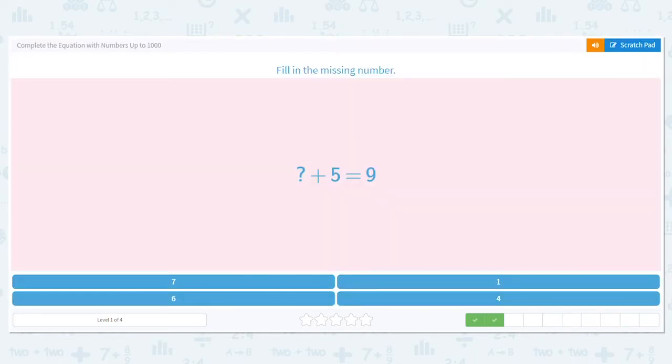Let's try another one. Blank plus 5 equals 9. Now this time there's answer choices. We have 7, 1, 6, and 4. Worst comes to worst, you can always guess and check. You can plug in the 7 and do 7 plus 5. You can try 6 plus 5 and see if that gives you 9. You can go on and on.